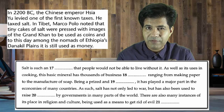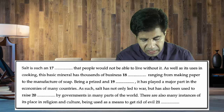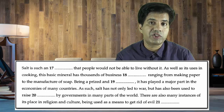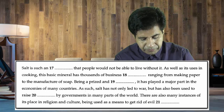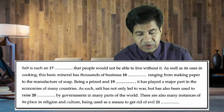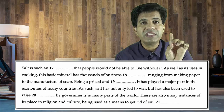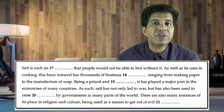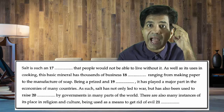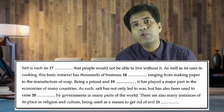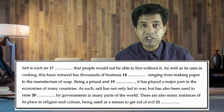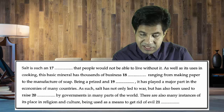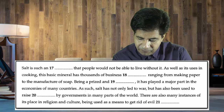Next: 'There are also many instances of its place in religion and culture, being used as a means to get rid of evil dash.' The clue words are 'evil,' 'religion,' and 'belief.' Sometimes you keep three or four clue words in mind. Here I'm looking for 'evil' and something related to culture and religion.